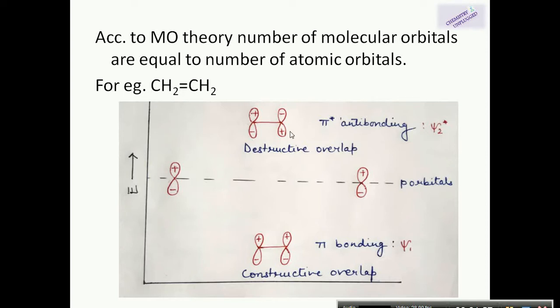And when they combine by destructive overlapping — meaning positive and negative wave functions are together — there is a pi anti-bonding orbital, denoted by psi 2 star.